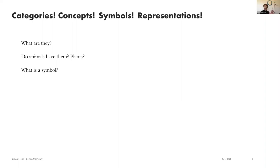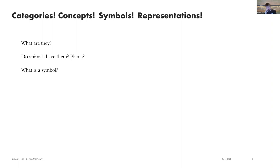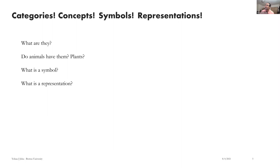I remember Ev Fedorenko was telling us that people who had some kind of aphasia where they lost their language could actually play chess — but they had language at some point in their lives. It's not like feral children learning to play chess directly. If Krishna and Marge Livingstone can teach monkeys how to do symbolic addition, they could probably teach them how to play chess with enough trials. Representation — I think this is fairly well-covered. We've talked about it a lot.